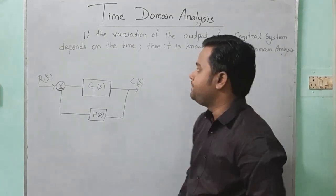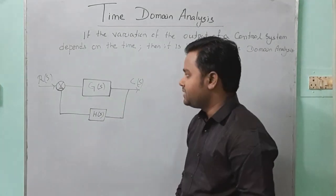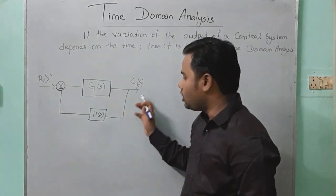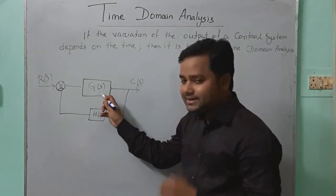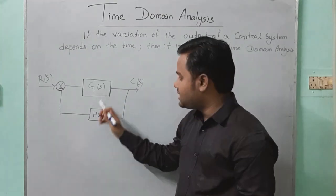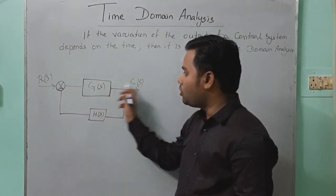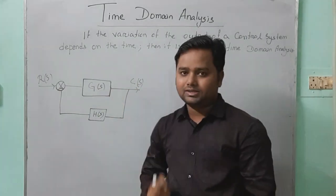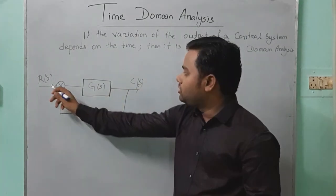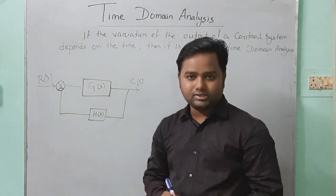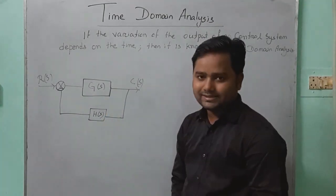As we have known, this is a control system. Input is R of S, output is C of S, gain is G of S and feedback is H of S. These four are the common parts of a control system, and all these four parts are defined upon the frequency, that's why it is denoted by S signal.